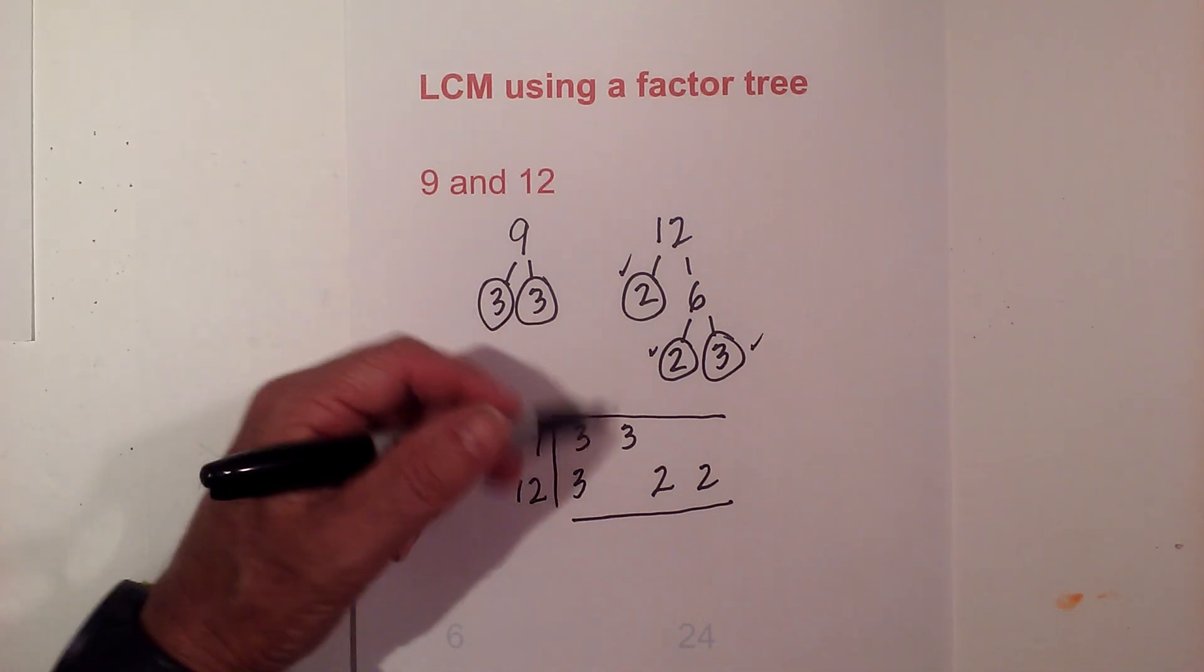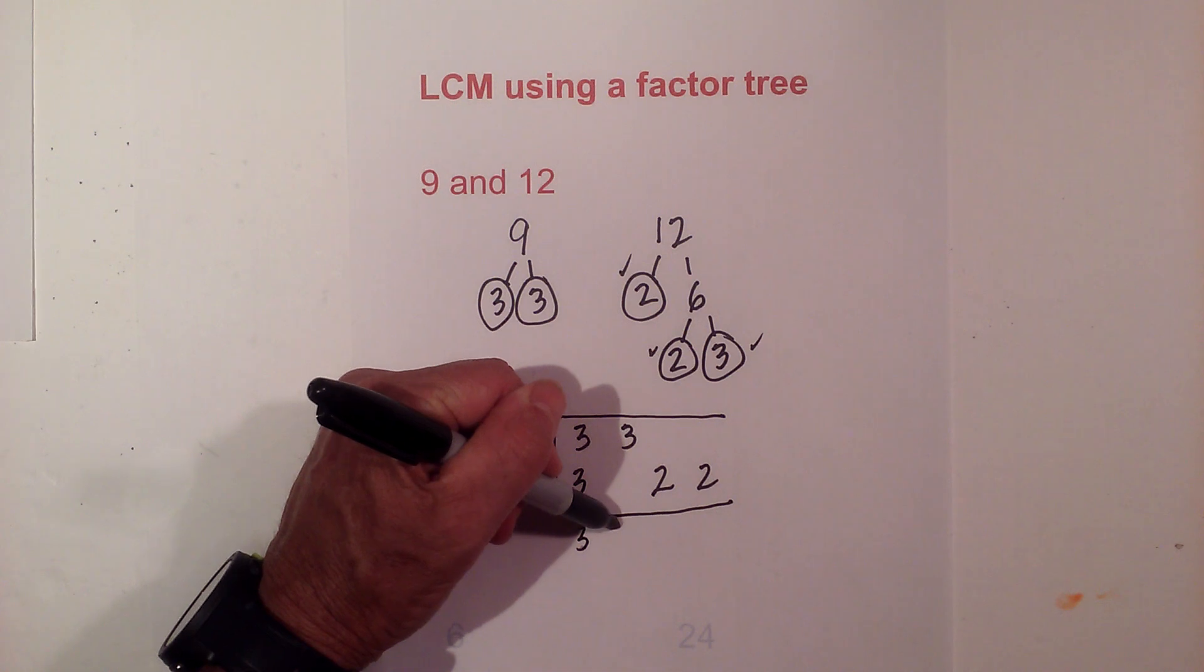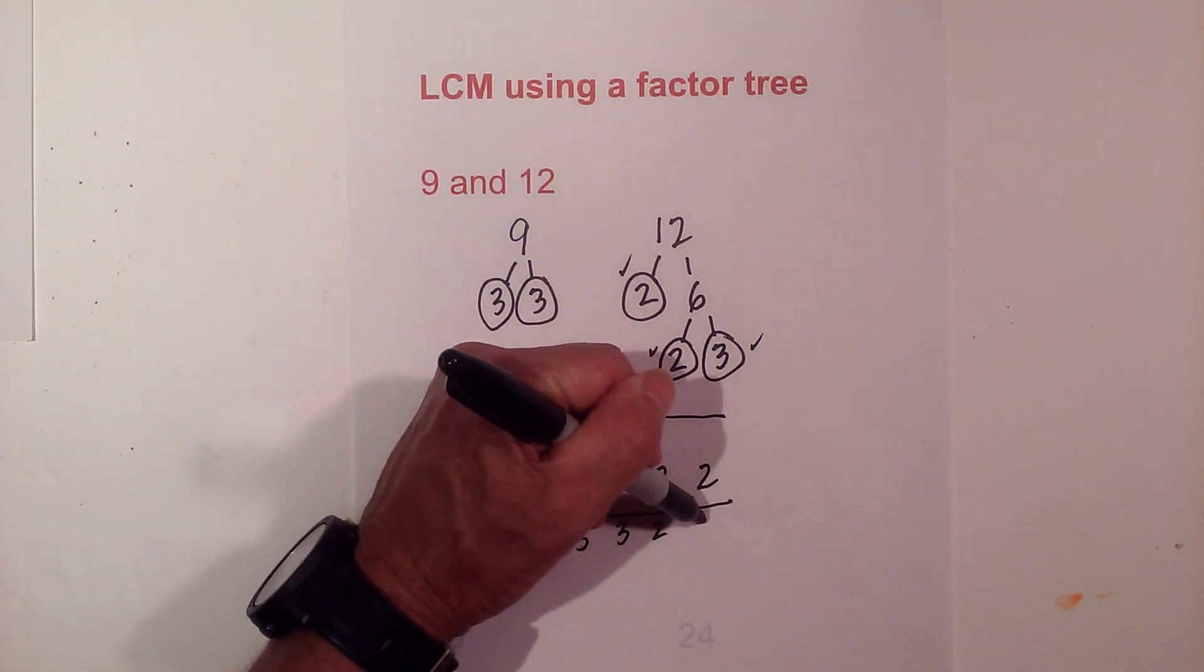Since I have a vertical pair I bring down 1, 3, bring down this 3, bring down a 2 and a 2.